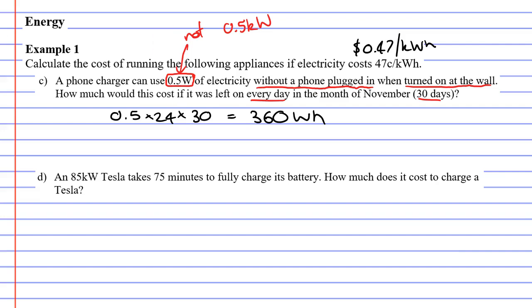So how do we convert this to kilowatt hours? Well, what we do is we take 360 and divide it by 1,000. This will give you 0.36 kilowatt hours. So it's not even one kilowatt hour that you've used.